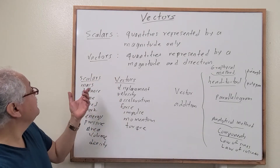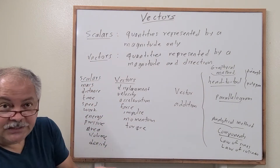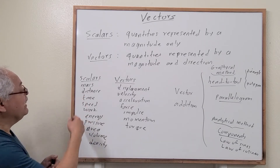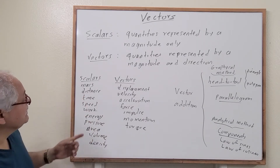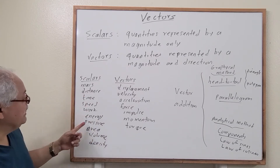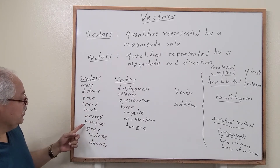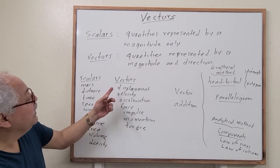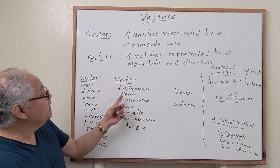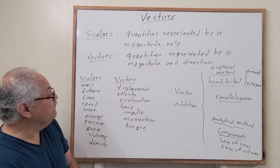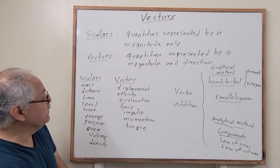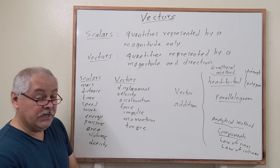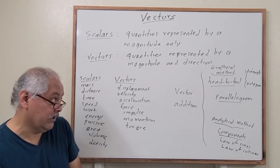These are the main scalars and vectors in mechanics. Scalars include: mass, distance, time, speed, work, energy, pressure, area, volume, and density. The vectors are displacement, velocity, acceleration, force, impulse, momentum, and torque.